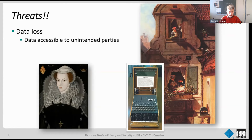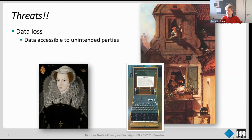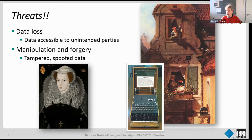The second common threat is manipulation and forgery. The story of Mary Queen of Scots illustrates this: somebody impersonated one of her co-conspirators in a letter, asking for names of other conspirators. She fell for the plot, which was then used as evidence to bring her to court. So in this case, there is tampered or spoofed data and the victim falls for the tampering.